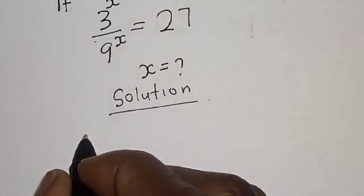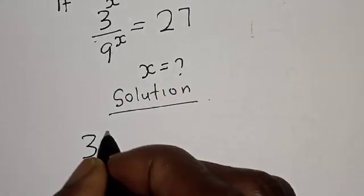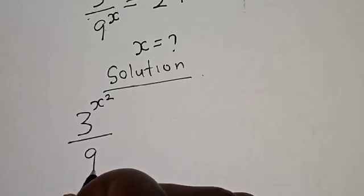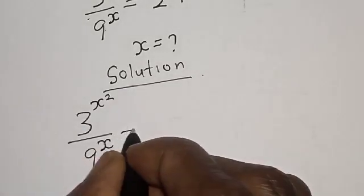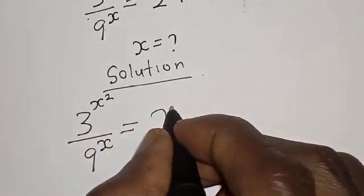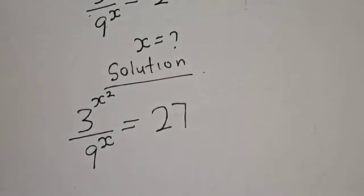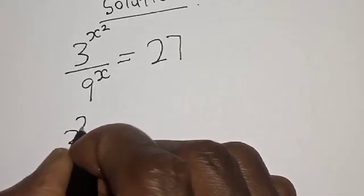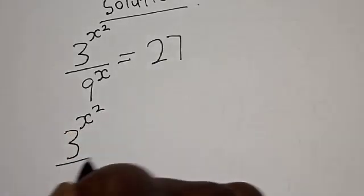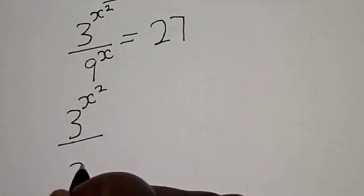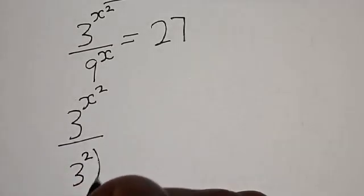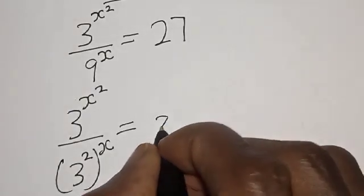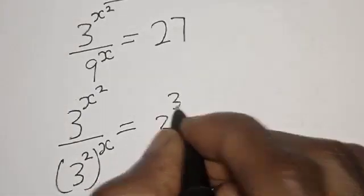We have the equation: 3 raised to power s squared divided by 9 raised to power s is equal to 27. This is the same thing as 3 raised to power s squared divided by 3 squared raised to power s, which is equal to 27.